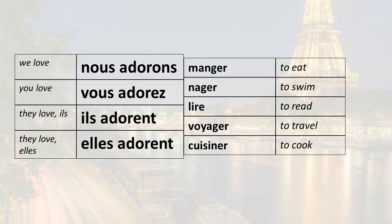And we've already learned how to make statements with adorer and infinitives, such as: we love to eat — nous adorons manger; we love to swim — nous adorons nager.